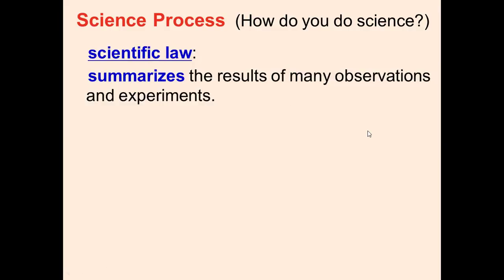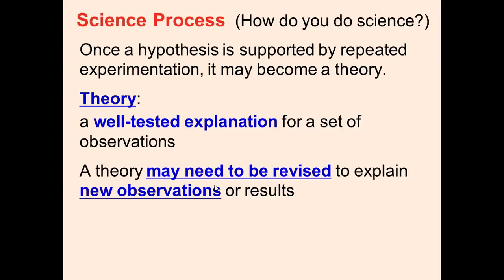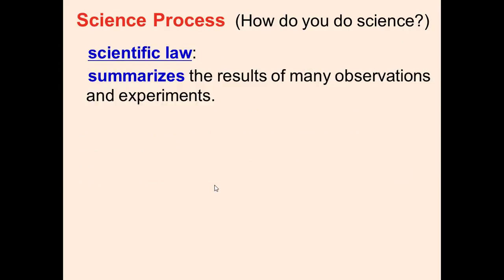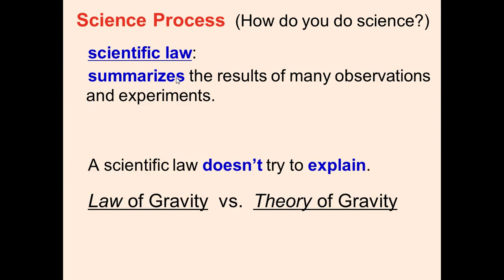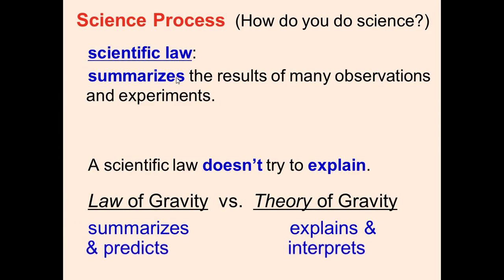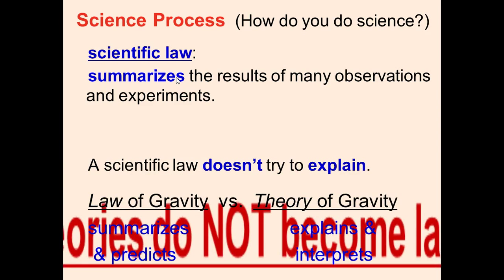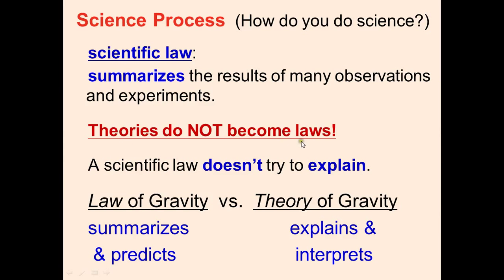I know that theories and laws are always confused, but they're totally different things. A scientific theory is a well-tested explanation for a set of observations. A scientific law pretty much just summarizes the results of many observations. Scientific laws don't explain, and they're often like math formulas. For example, you could do the law of gravity versus the theory of gravity. The law of gravity summarizes and predicts while the theory explains and interprets. It's always important to know that theories and laws are not really related. Theories can't become laws, and laws can't become theories. They're just two totally different things.